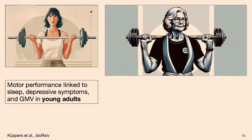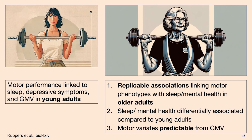To conclude: we found that motor performance, similar to young adults where it was linked to sleep and depressive symptoms, showed a replicable association also in older adults — with a somewhat differential pattern compared to young adults, where sleep and mental health were more generally associated with motor phenotypes. Lastly, the motor variates were predictable from gray matter volume.